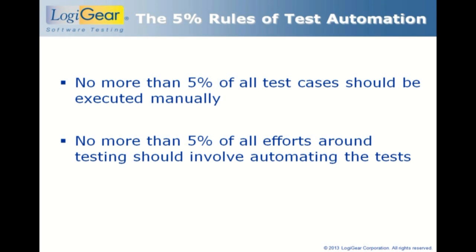The second rule is that you should be able to achieve that 95% with no more than 5% of your efforts on average. You should not make it an automation project where more than half of your team is worrying about automation. People should focus on designing better tests, and the automation should be relatively easy, even when there are a lot of changes in the system under test. That is a high bar, but it's deliberate. Let's see how far we can get with the materials.